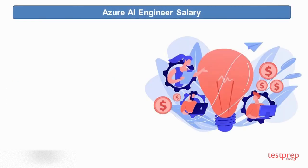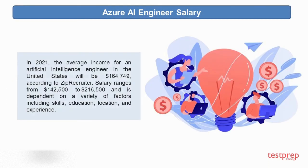Azure AI engineer salary. In 2021, the average income for an artificial intelligence engineer in the United States was $164,749, according to ZipRecruiter. Salary ranges from $142,500 to $216,500 and is dependent on a variety of factors including skills, education, location, and experience.